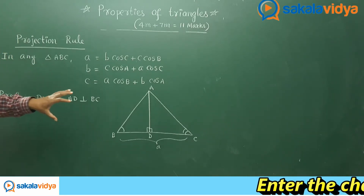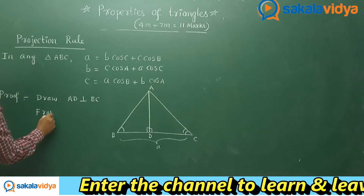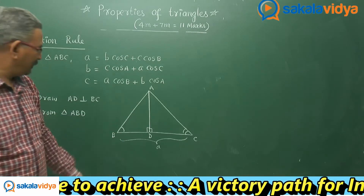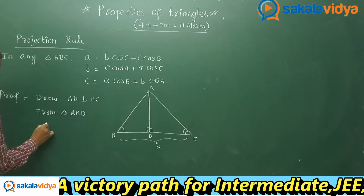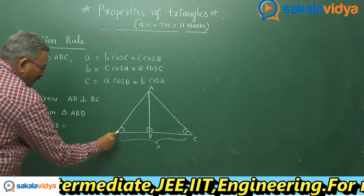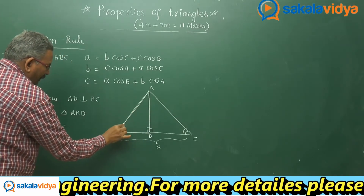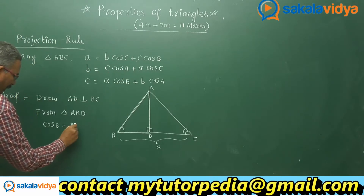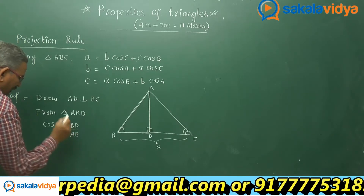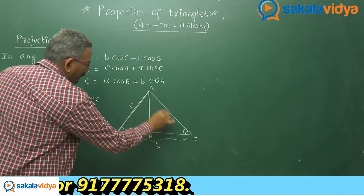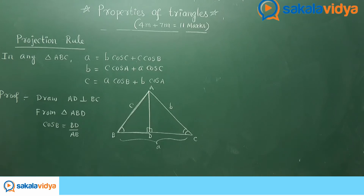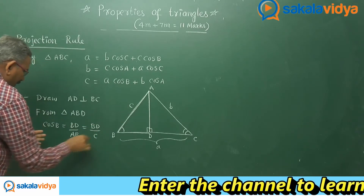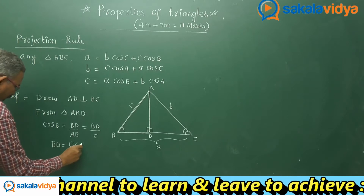From triangle ABD, let us define cos B. Cos B is equal to the adjacent side BD divided by the hypotenuse AB. Here AB is small c. So by cross multiplication, BD equals c·cos B.